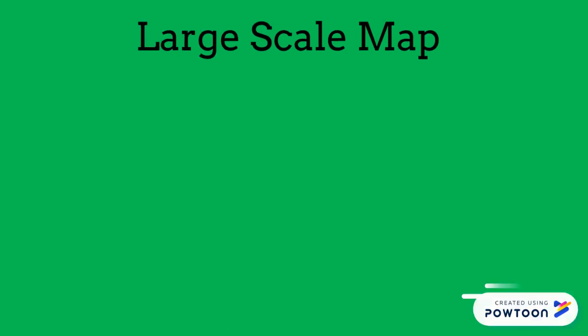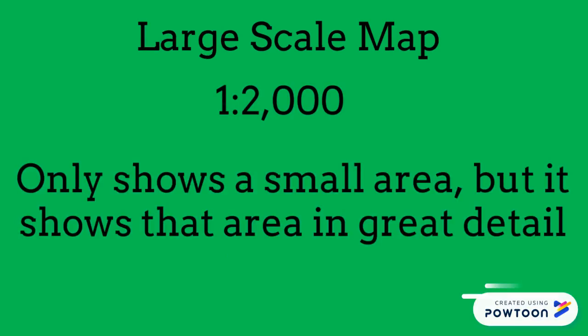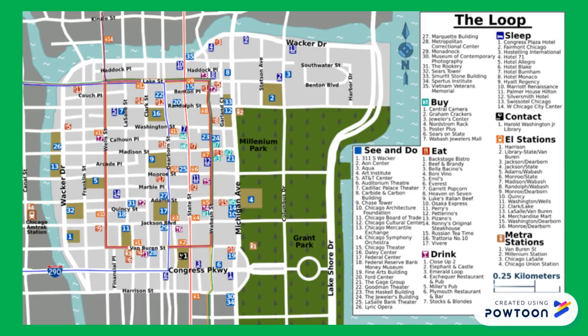A large scale map, such as 1 to 2,000, only shows a small area, but it shows that area in great detail, such as this map of an area called the Loop in Chicago.